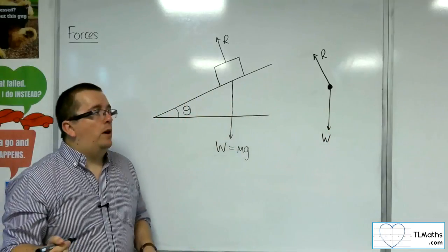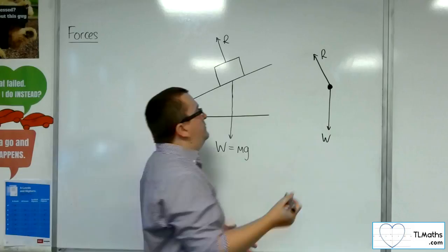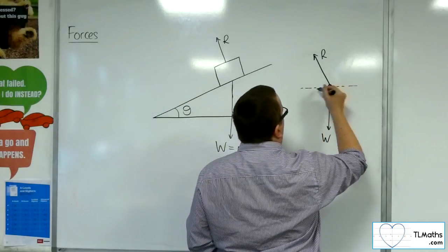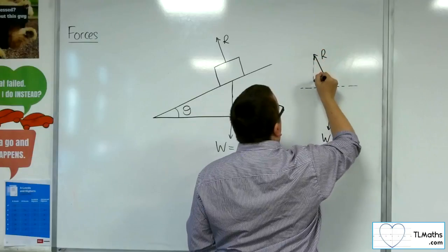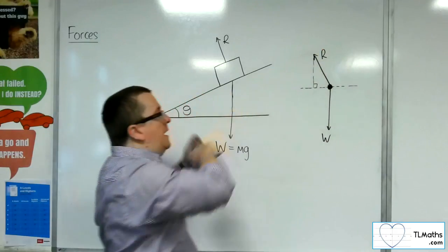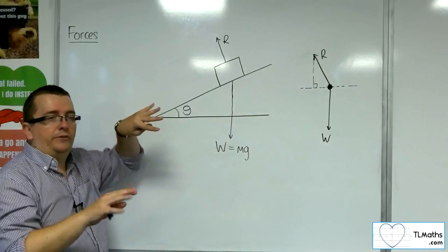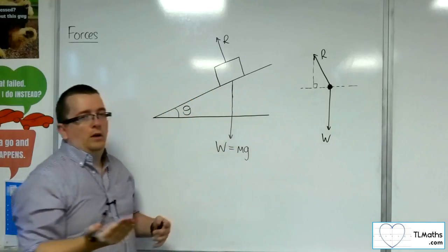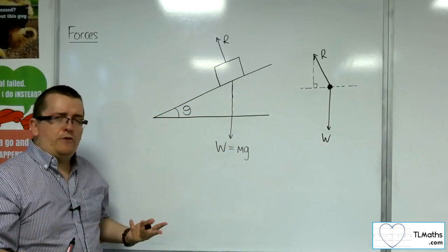Then ordinarily how I would have dealt with this is I would have thought, well, if I draw in a horizontal line and then complete this triangle, then I can divide the normal reaction force into its component parts, into its horizontal and vertical components, which is fair enough.